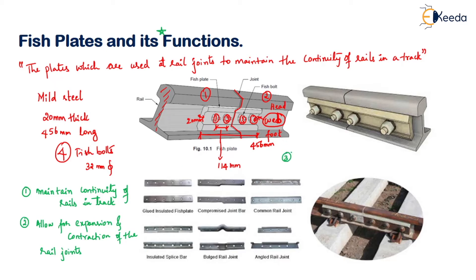The third and important function is to maintain the correct alignment of the track. It should not allow any lateral or vertical movement of the rail joint. If it prevents lateral and vertical movement of the rail joint, the alignment of the railway track will be properly maintained.